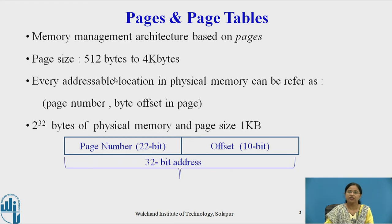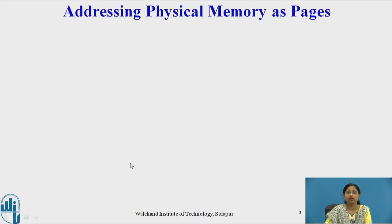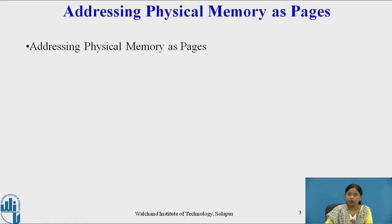So the 32-bit physical memory can be addressed as a page with a 10-bit offset and a 22-bit page number. Now let us see how physical memory can be addressed as a page.